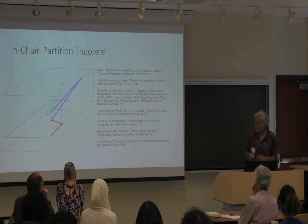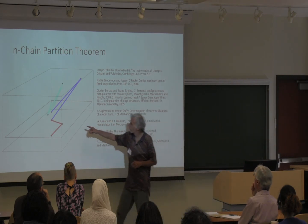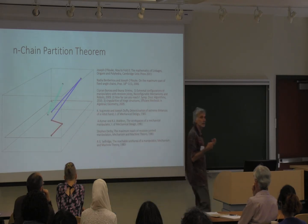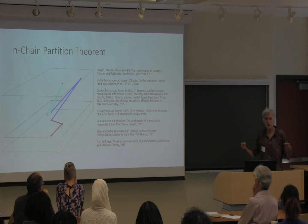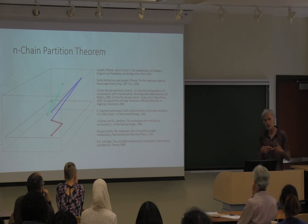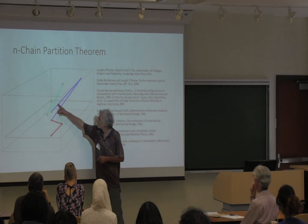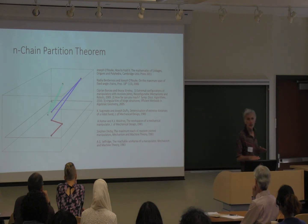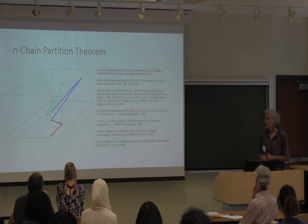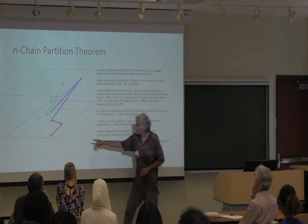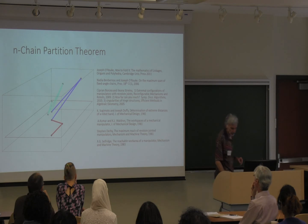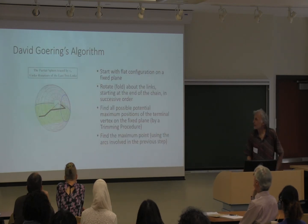The places where the planar sections connect are called joint points. The main result is that when you have a maximum distance between the start and the final endpoint, those joint points — where the planar sections meet — form a straight line. So the basic strategy is to take the first planar section and let it create a fixed plane, then start moving the chain around to find where it goes and maximize the distance.